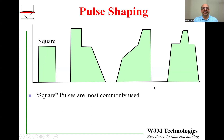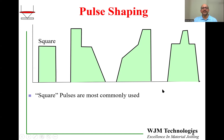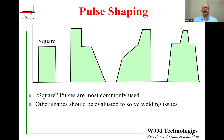Many pulse shapes can be used — there is no limit to what shape you can design as long as you can program it. The square pulse is the most commonly used, but I typically use a pulse with a high peak power at the beginning, a shelf, and a downslope. I have also used other pulse shapes as required for specific applications. There is no real constraint on what type of shape you can use; as long as it solves your welding problem, you should try using these pulse shapes.